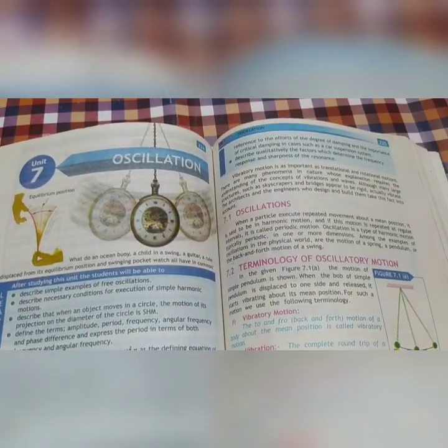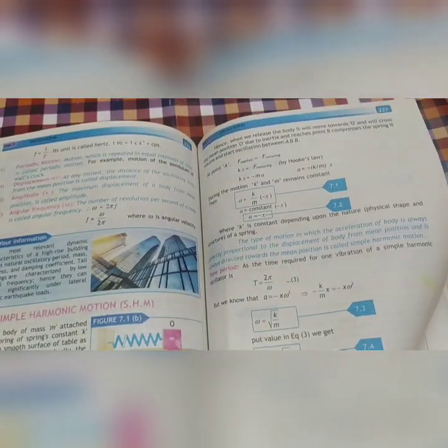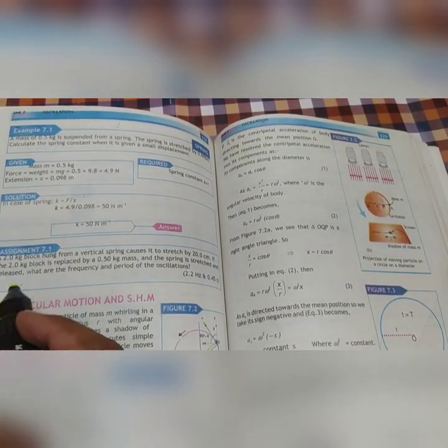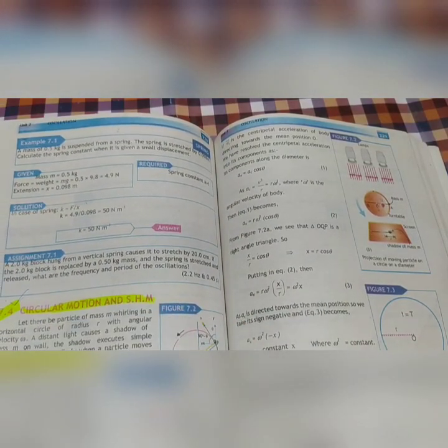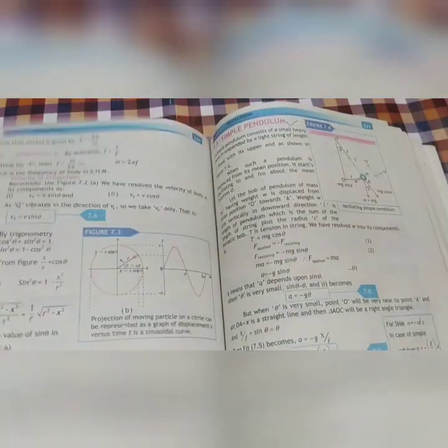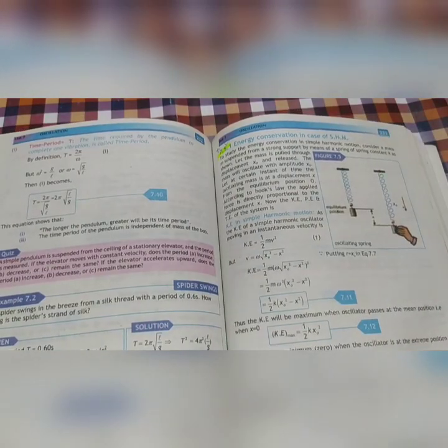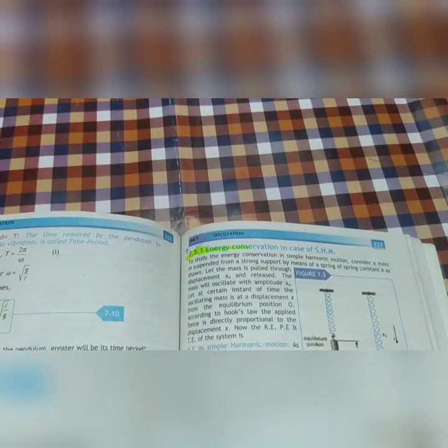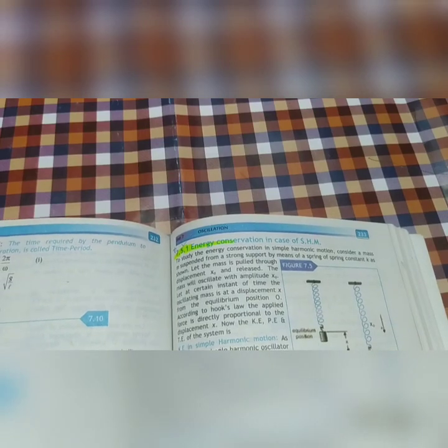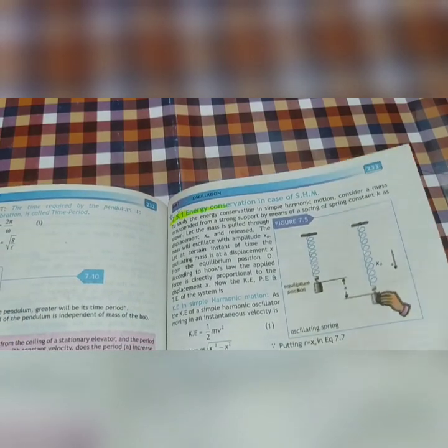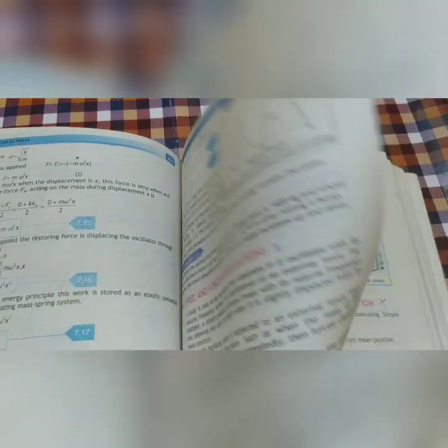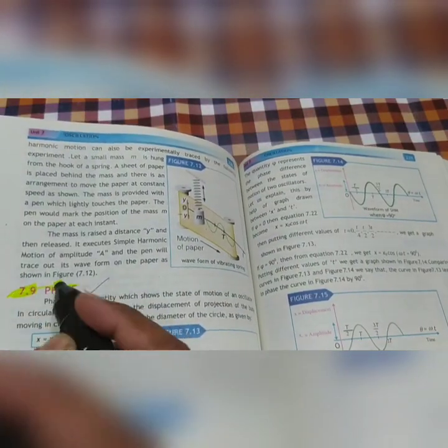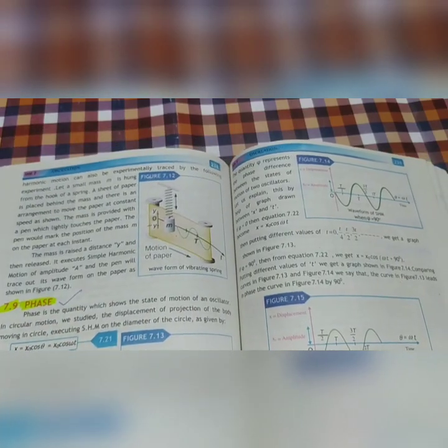Then we will go to Chapter Number 7. Chapter Number 7, you have Circular Motion and Simple Harmonic Motion. 7.4, page 228, Simple Pendulum. 7.5.1, Page Number 233, Energy Conservation in case of Simple Harmonic Motion, very important. Then you have 7.9, page 238.